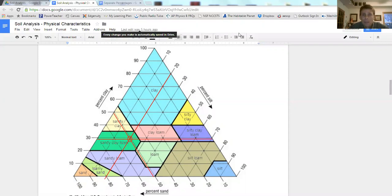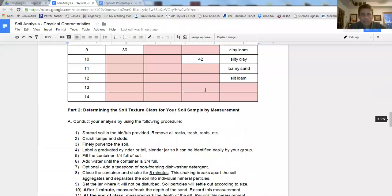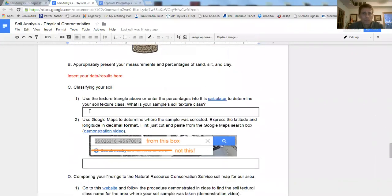So now we know that we have sandy clay loam. So in our worksheet, we can go down to the C part, C1, and I can type in that I have sandy clay loam.